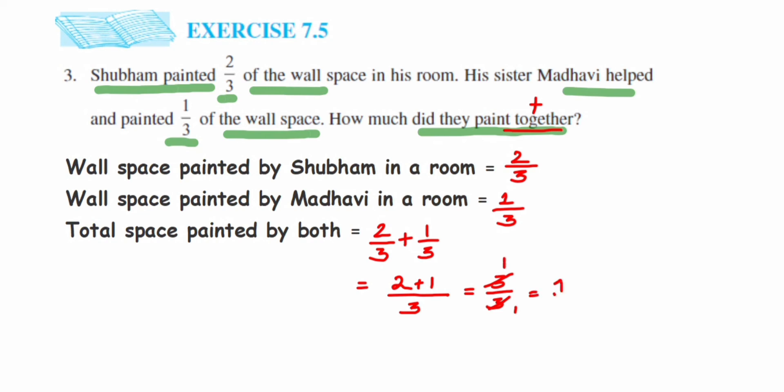So one means it's a whole thing, like whole wall they have painted together. So that will be the conclusion here. So let me write down here the conclusion that Shubham and Madhavi painted whole wall together.